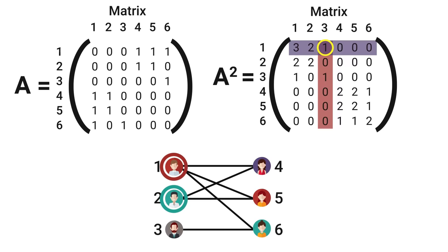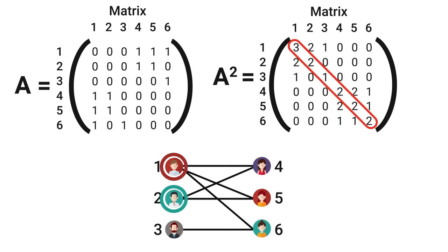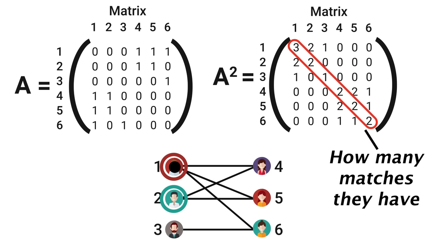But now what would the diagonal mean? Well that's how many paths of length 2 exist between a person and themself aka how many matches they have. Think about it for person 1 if I start there to get back to 1 in two edges I can go to 4 than 1, 5 than 1, or 6 than 1. Three options for the three connections. This is why we see a 3 there in the matrix. Person 2 then has two matches and it goes on.